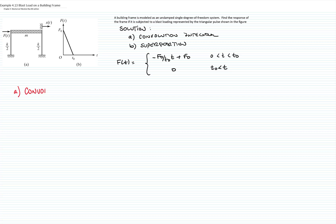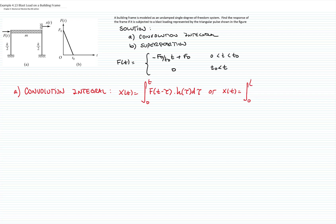Let me start with the method of convolution. We recall that the convolution integral is defined as the integral from 0 to t of f(t − τ) h(τ) dτ, or equivalently the integral from 0 to t of f(τ) h(t − τ) dτ. We can use either form and get the same solution. Remember that h is the impulse response, which is 1 over m·ωₙ · sin(ωₙ t), for an undamped system.